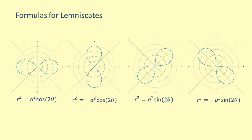Let's look at the formulas for lemniscates. The formulas are given by r squared equals a squared cosine of 2 theta and r squared equals a squared sine of 2 theta, where a is not equal to 0.